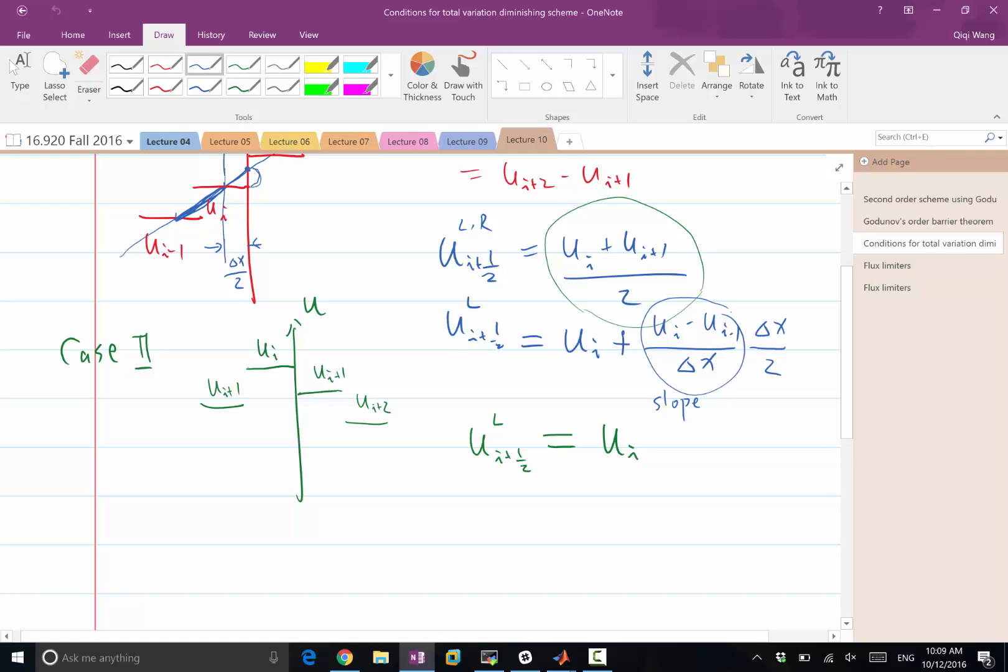So what we have is the following. In the first case, when the solution is locally smooth, we have ui plus a influence from the next cell. In the other case, when the solution is not smooth, we have just the ui without influence from the last cell.